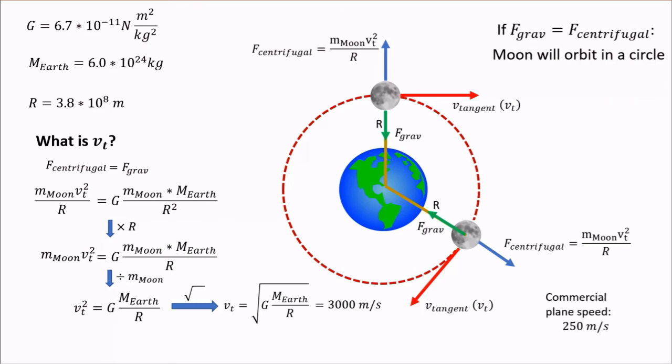To conclude, we have learned that an object can orbit another object in space in a perfect circle, provided it has a very exact tangential velocity, given by this expression that we derived.